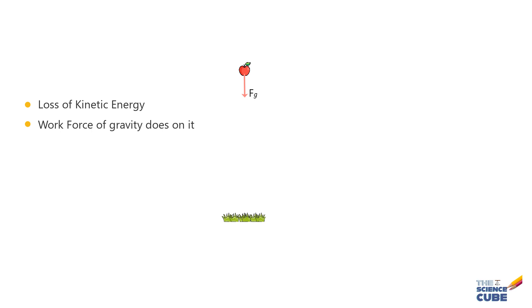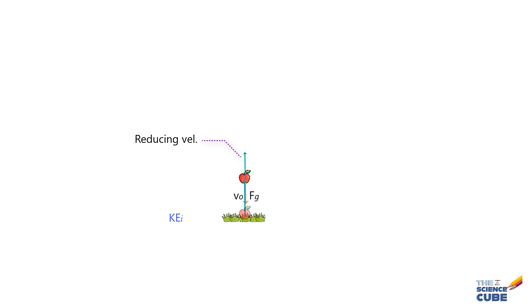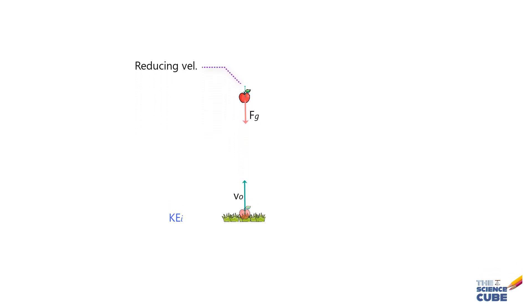So let's once again throw the apple up in the air and see what exactly is happening at every stage of the flight. Let us assume that the initial velocity is v₀, which means that we have imparted a certain initial kinetic energy to it. As the apple moves up, its velocity is reducing since the force of gravity is acting against it.